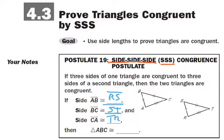Remember from yesterday, when you write a congruence statement, the parts have to be in corresponding places. Angle A corresponds with angle R — A is where the one and three tick marks come together, and R is where the one and three tick marks come together. B is where the one and two tick marks come together; S is where the one and two tick marks come together on the other triangle. C and T are both where the two and three tick marks meet. So the order matters: triangle ABC is congruent to triangle RST.